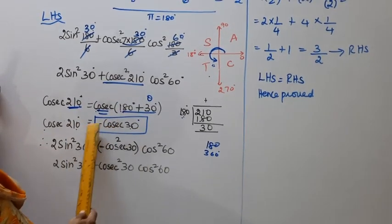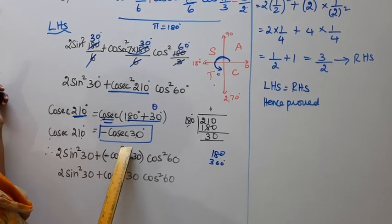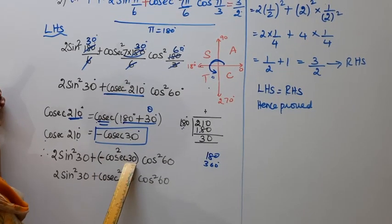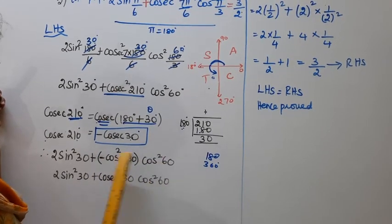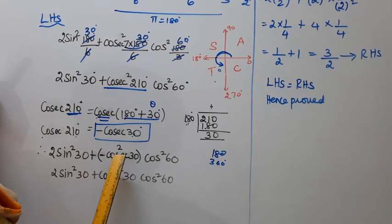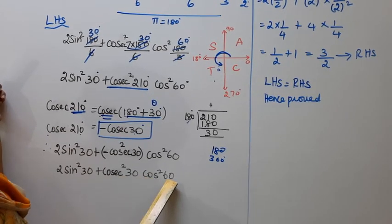This becomes 2 sin squared 30 minus cosecant squared 30 into cos squared 60.